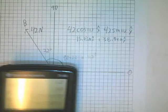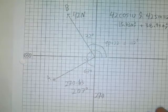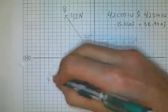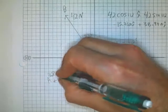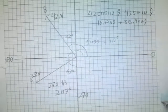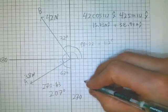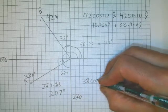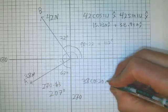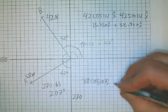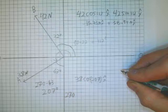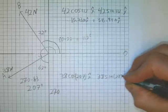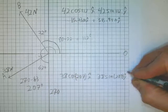And then we can go and we can find the components of this guy down here. This guy, let's give it a magnitude, let's say it's 38 newtons. Well, then A is just simply going to be 38 cos 207 in the x direction, and 38 sine 207 in the y direction.